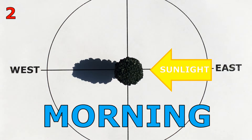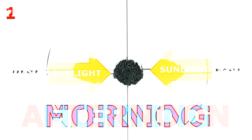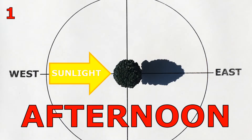The changes we see in the appearance of shadows are evidence that the earth is rotating. In the morning, the sun is in the east, and the shadow ends up pointing away from the sun. In the afternoon, the sun is in the west, and the shadow is on the opposite side of the tree from where it was in the morning.